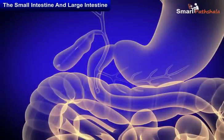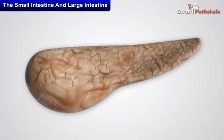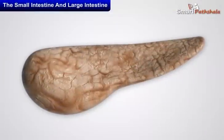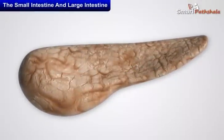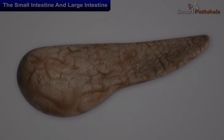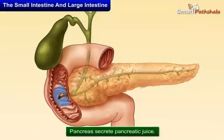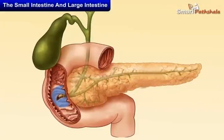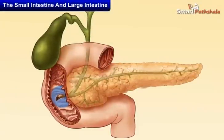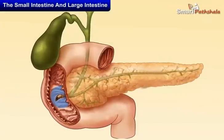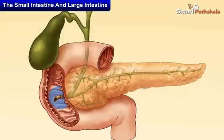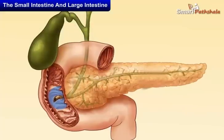Bile helps in the digestion of fats. The pancreas is a large, cream-colored gland located below the stomach. The pancreas secretes pancreatic juice that acts on carbohydrates and proteins and changes them into simpler forms.